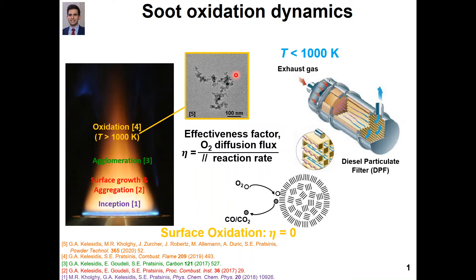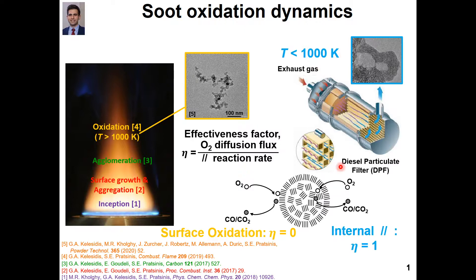Diesel particulate filters have been designed to collect mature soot agglomerates that may have survived this surface oxidation process and further oxidize them at temperatures below 1000 Kelvin. At these conditions the effectiveness factor has a value close to one, so oxidation takes place within the pores of the soot primary particles that constitute the mature soot agglomerates that I showed you earlier.